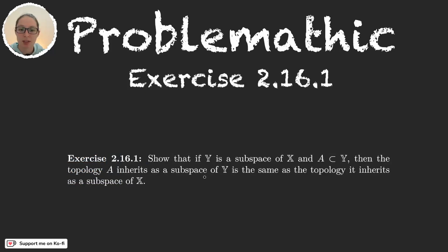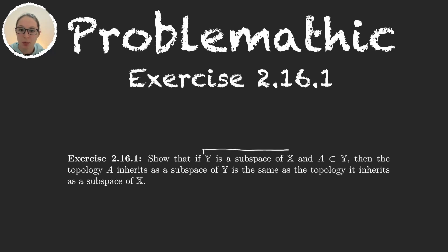In this exercise, we are told that Y is a subspace of X. When we read this sentence, we have to think two things: first, that we have a set X with a topology τ_X, and a subset of X, Y, with its inherited topology. If you don't remember much about the subspace topology, then check out the video we have about that.